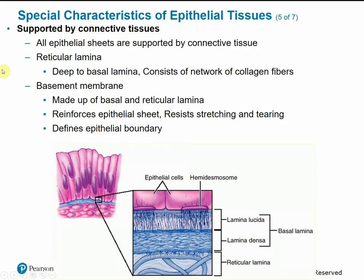All epithelial tissues are supported by connective tissue — an underlying sheet that keeps epithelial tissue attached. The reticular lamina is deep or below the basal lamina and consists primarily of collagen fibers, giving the skin and epithelial tissue great tensile strength. The basement membrane is made up of the basal lamina and the reticular lamina together, reinforcing the sheet of epithelial tissue and resisting stretching and tearing.